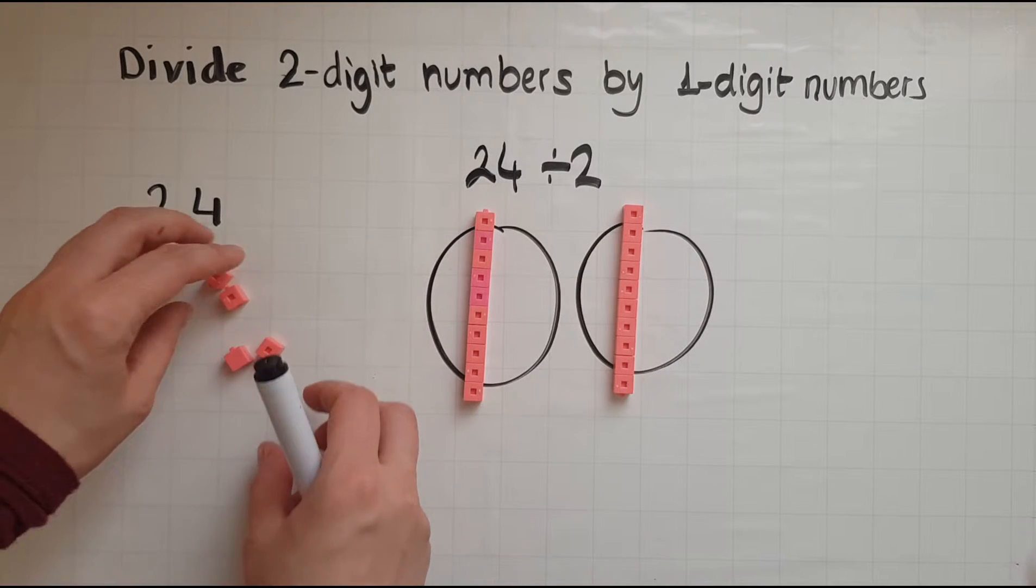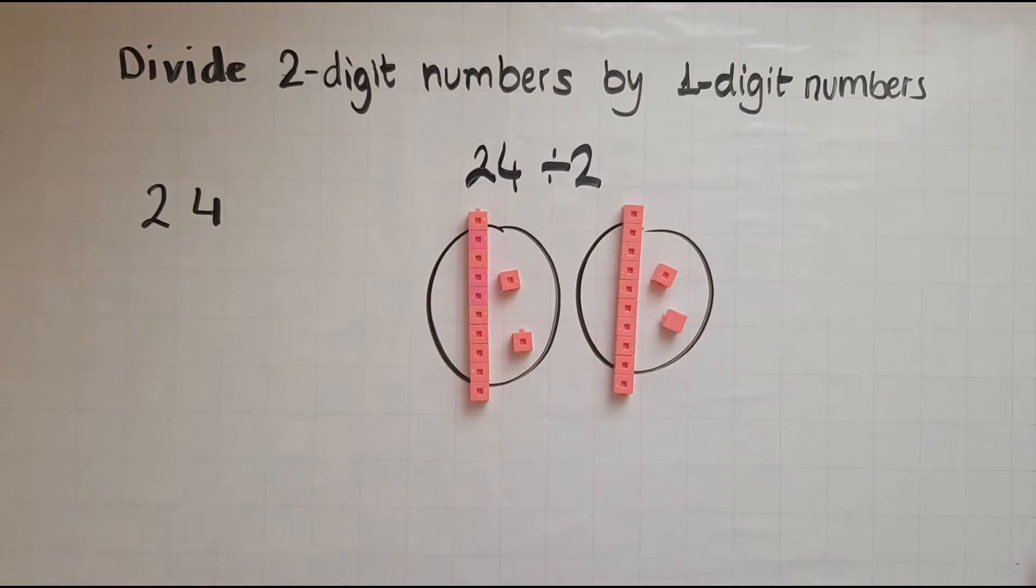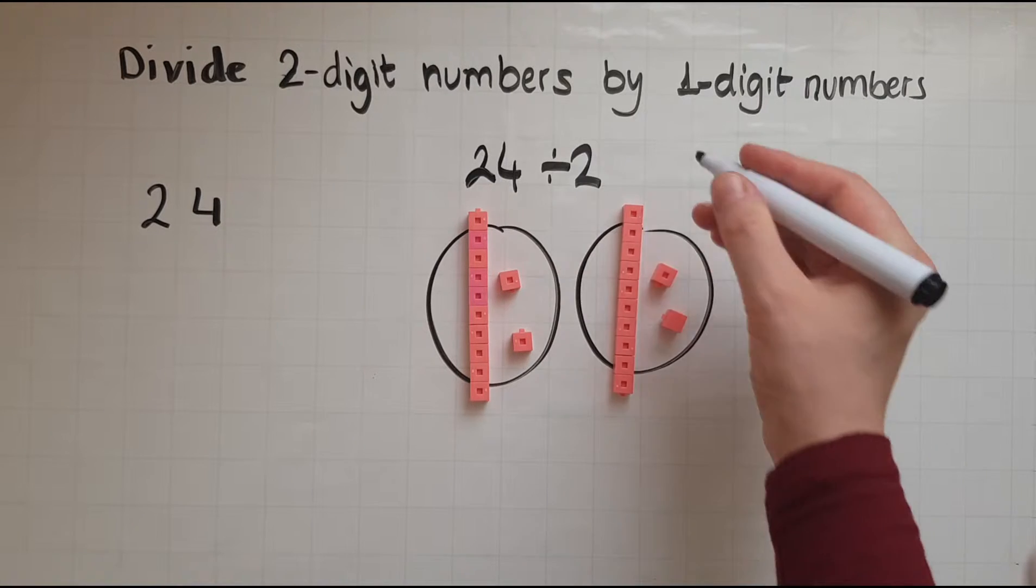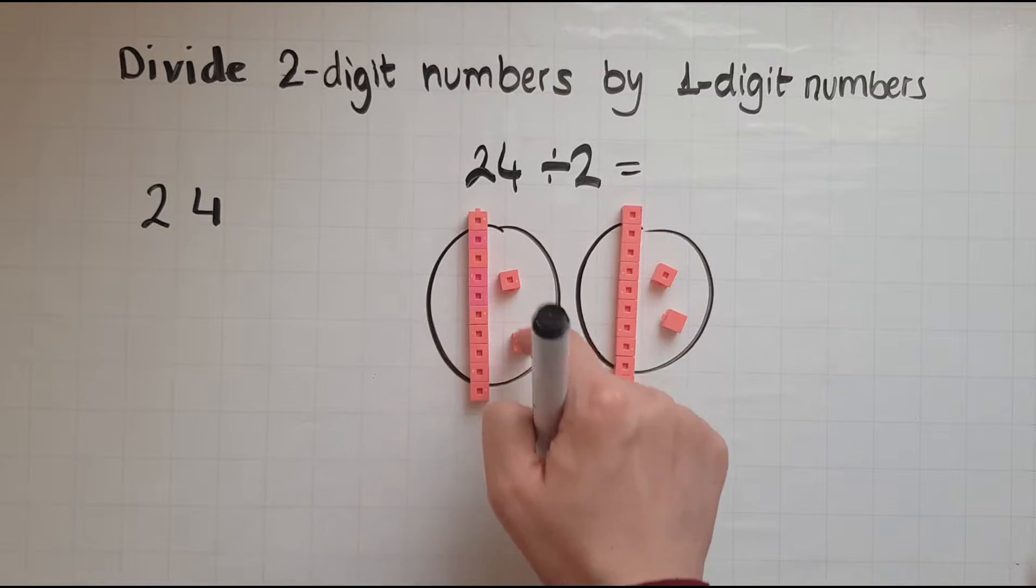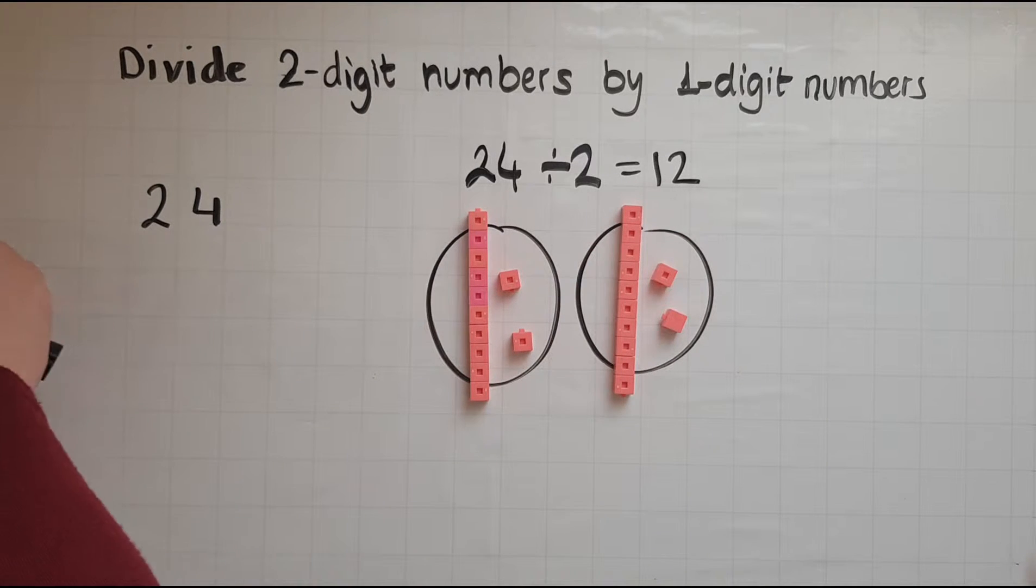Now I have four. So I'm going to put one in each and another one in each of them. So how many does each set have? That is 10, 11, 12. So I've got 12 in each and every one. I've cut them in half, I've created two equal parts.